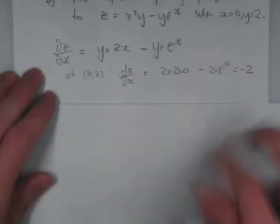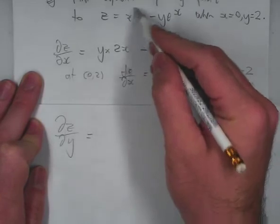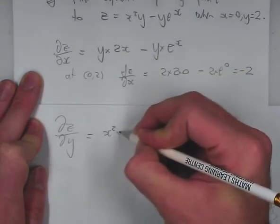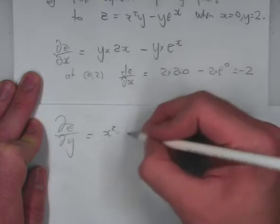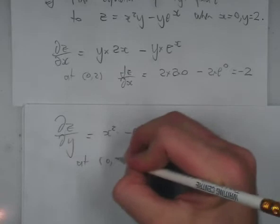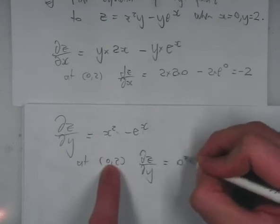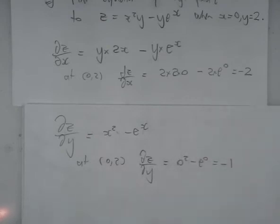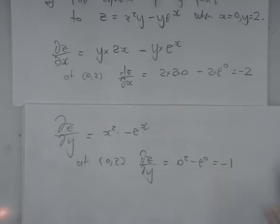I also need the y slope, so dz/dy. This time x is a constant, so x squared stays there, the derivative of y is just 1, and e to the x is a constant so it stays there — giving dz/dy equals x squared minus e to the x. At the point (0, 2), dz/dy equals 0 squared minus e to the 0, which is negative 1. So if I face in the y direction, for every one across I go down 1 on my tangent plane.